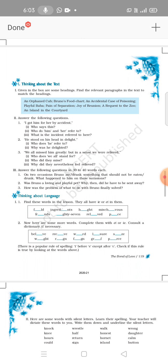Thinking about the text: Given in the box are some headings, find the relevant paragraphs in the text to match the headings. I think this is not tough for you. First heading: An orphan cub - paragraph one can be given heading an orphan cub.